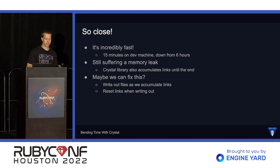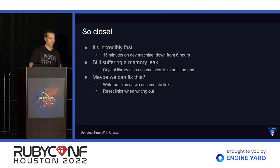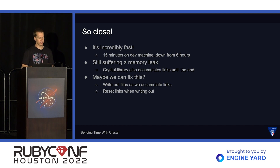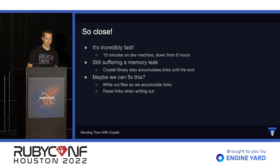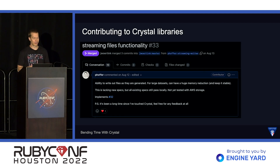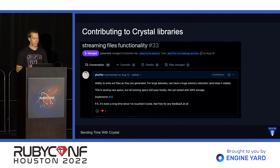But maybe we can fix this. Contributing to Crystal code can be very straightforward because it's so similar to Ruby. I remembered that sitemap files can only contain 50,000 links and you have to split them into more files when you go past that. So maybe we can write out the files as we go and then we don't need to keep all of the links in memory the entire time. I dove into the Crystal code for Sitemapper and eventually got it working to write the files and reset the links as it went through processing. I submitted a PR, and after some conversation and updates with the maintainer, we merged it. And then with this functionality working, we reran the generator and we don't have the memory leak anymore.